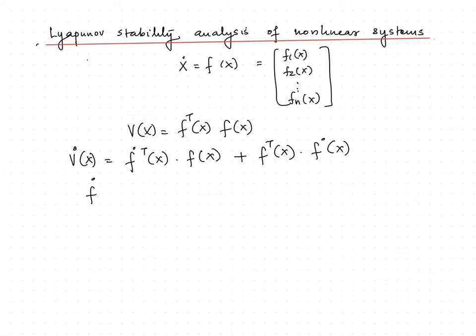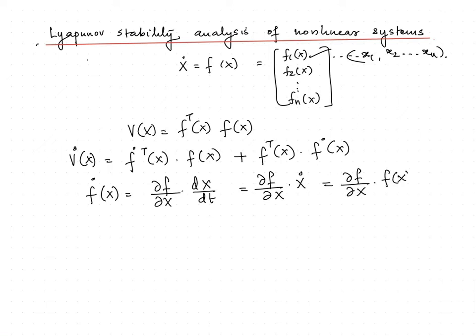But we can see that f dot of x is ∂f/∂x into dx/dt. Since f itself is a function of x1, x2, etc. up to xn, this equals ∂f/∂x into x dot, that is ∂f/∂x into f(x). ∂f/∂x is nothing but the Jacobian matrix, which is the matrix formed by the partial derivatives of the constituent elements.